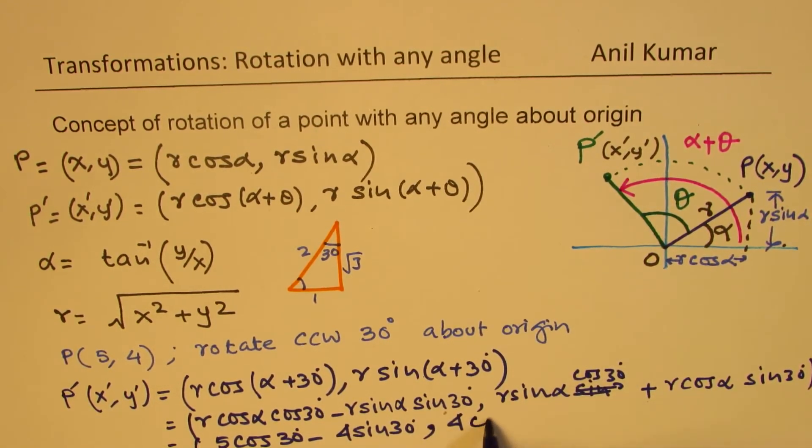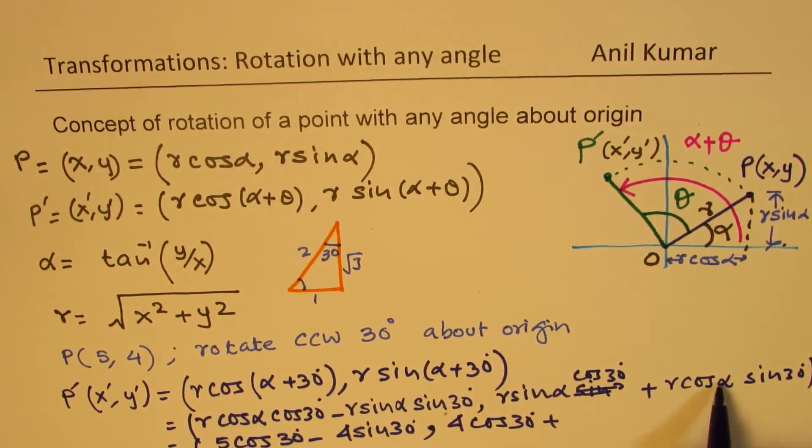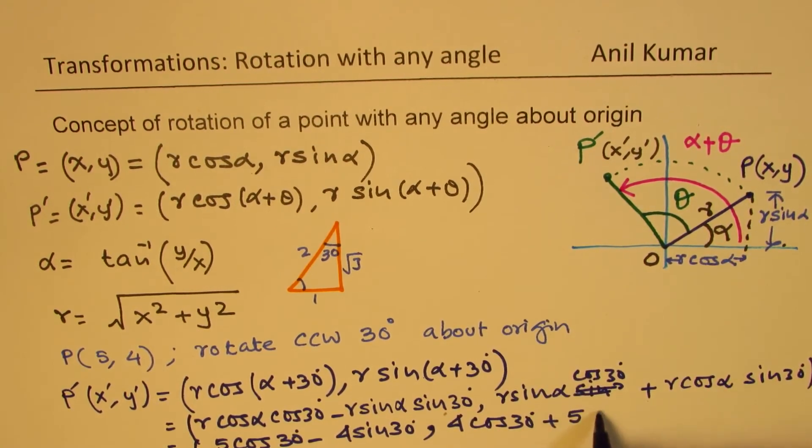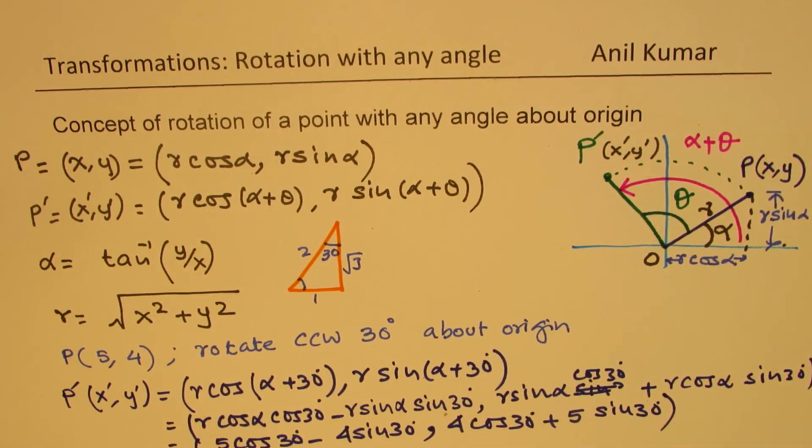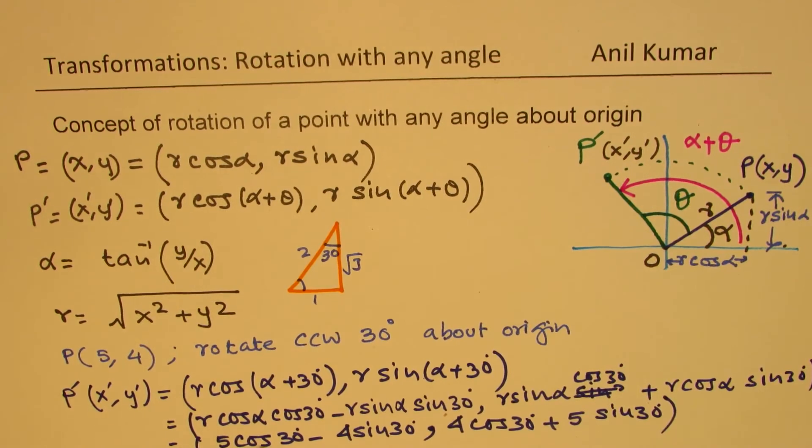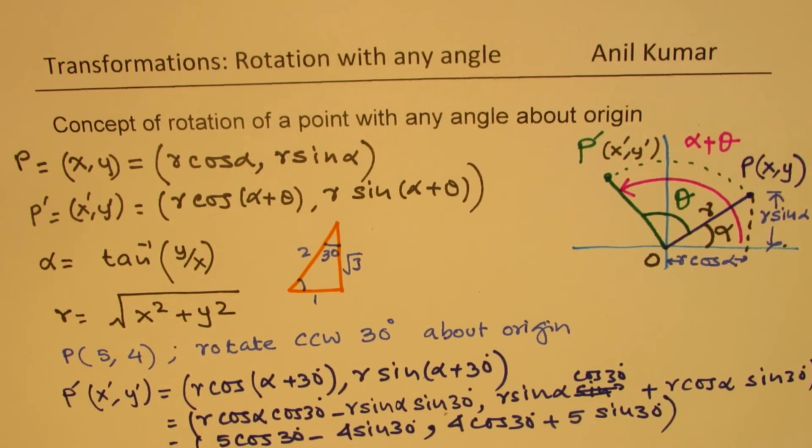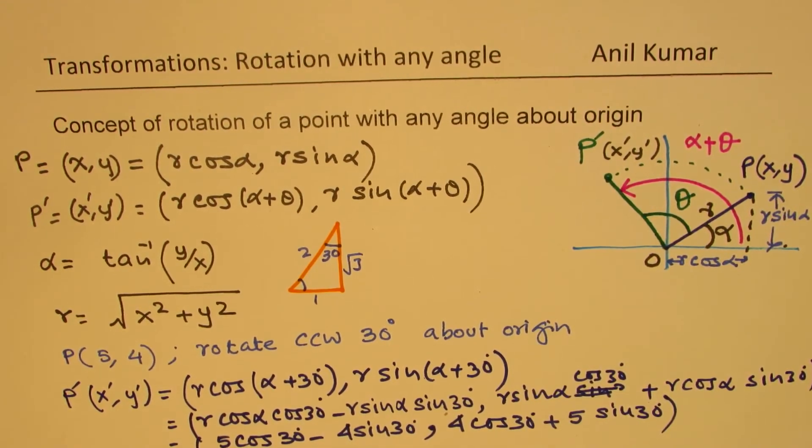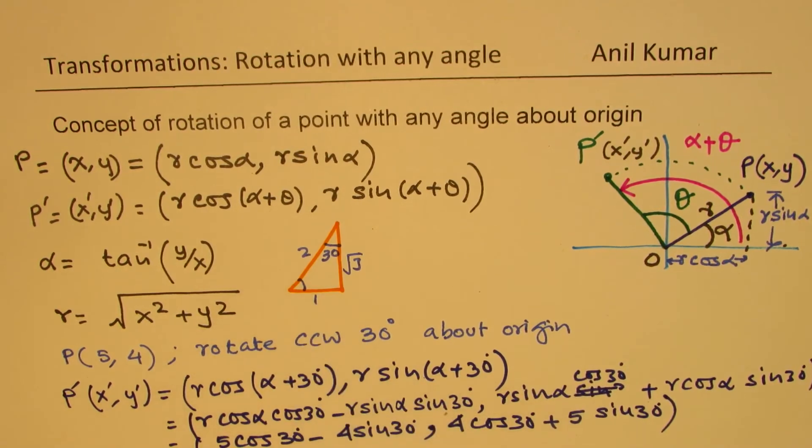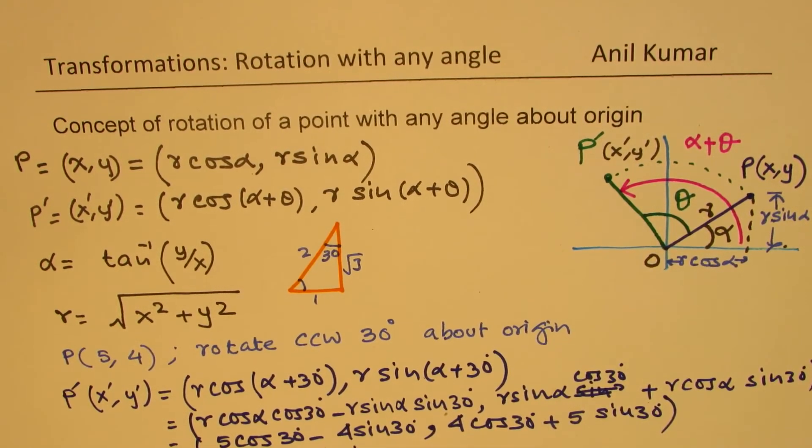So let me write cos 30 degrees first. Plus r cos alpha, which is x-value 5, of sine 30 degrees. Is that clear? Now we can substitute the values and simplify. So we get 5 times cos 30 degrees. Cos 30 degrees is square root 3 over 2. So that would be 5 square root 3 over 2 minus 4 times sine of 30 degrees, which is half. So that becomes the x-value.